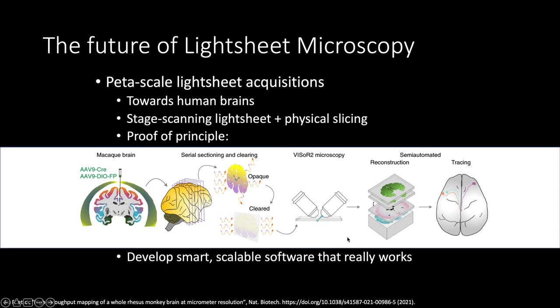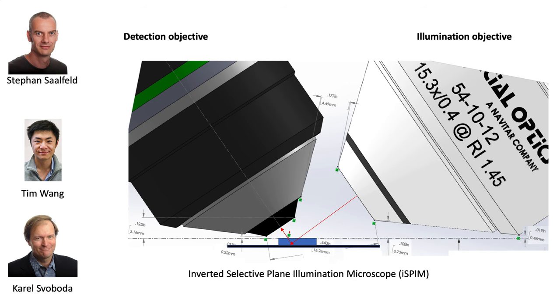They take the sample of interest, in this case a proof of principle with a macaque brain, slice it into non-overlapping sections, clear each individually, then use a diSPIM-like microscope to scan the entire sample and put it back together. I think this is one of the big directions where light sheet microscopy is heading. What we want to do is develop, as before with BigStitcher, smart scalable software that really works. They did a proof of principle, but it's not something you can just take and apply to your data. We have a lot of experience and want to push BigStitcher and related projects like Stitching Spark at the Saalfeld lab into a powerful package that can handle from very small confocal acquisitions to petascale datasets.